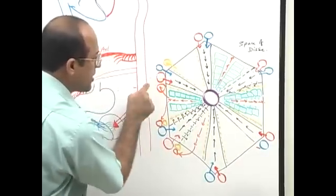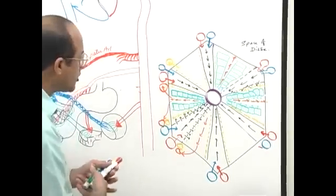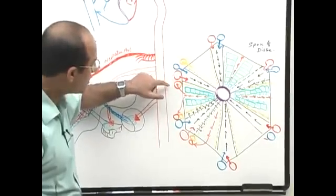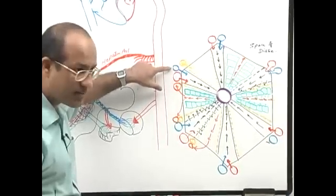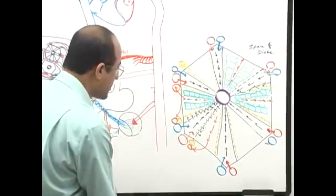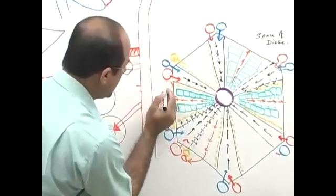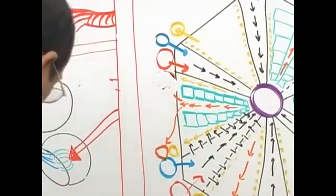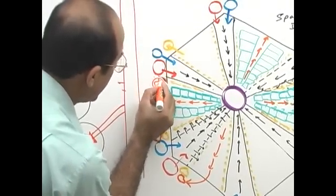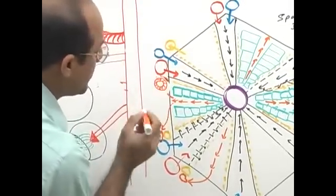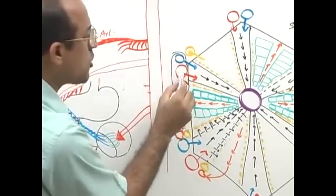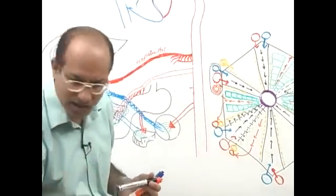How many channels or systems are present at the corner of the classical lobule? There are four systems. But unfortunately, early anatomists did not recognize the lymphatics, so they thought there were only three systems: a branch of the portal vein, a branch of the portal artery, and the bile duct. They called it the portal triad.